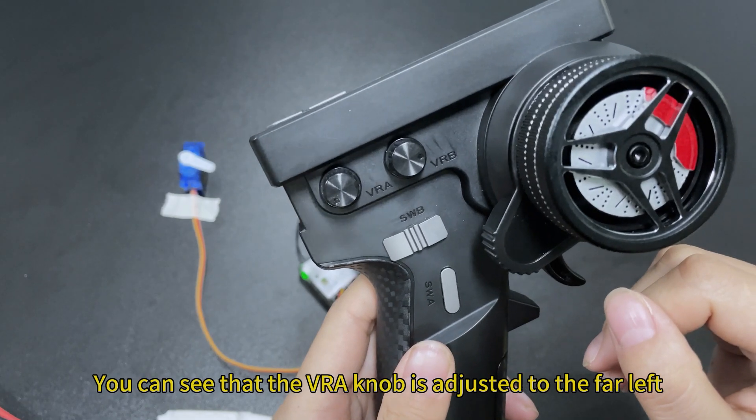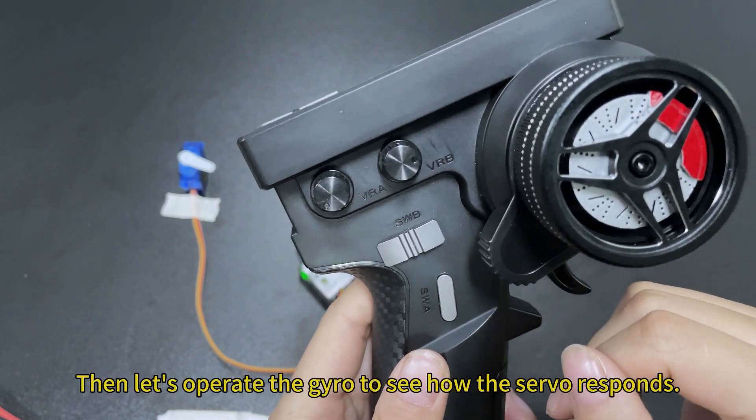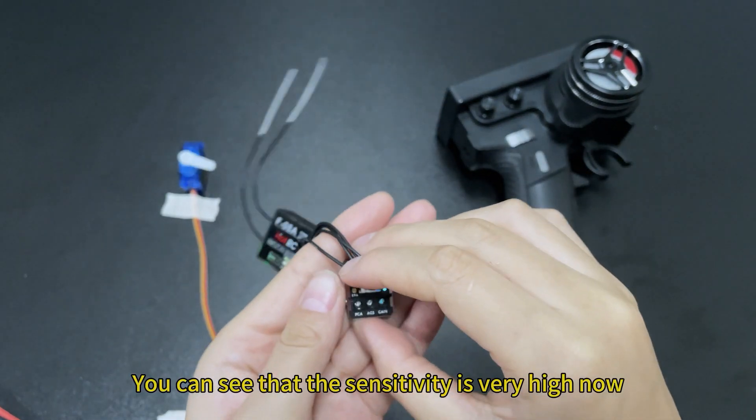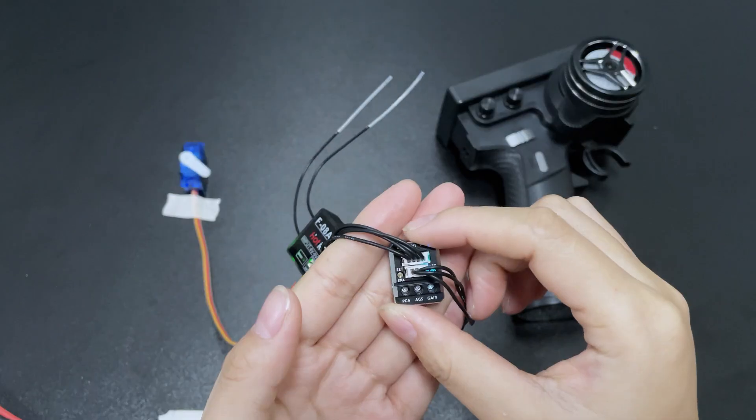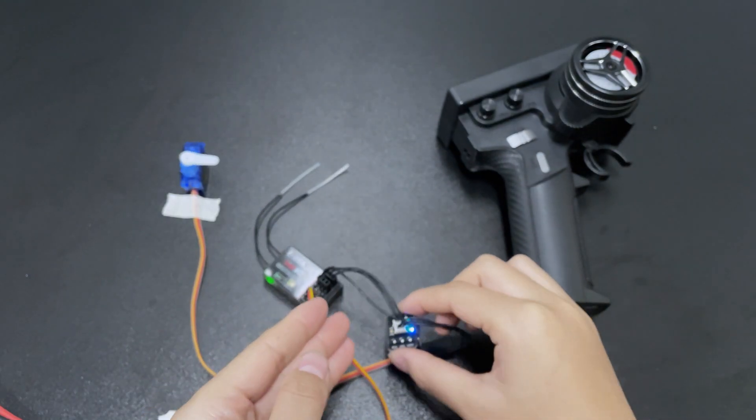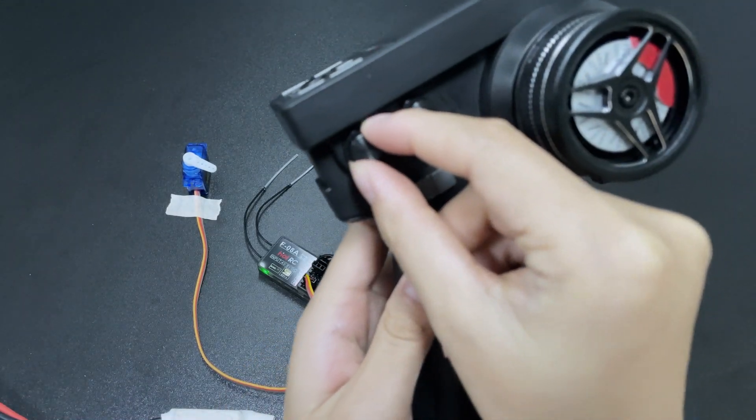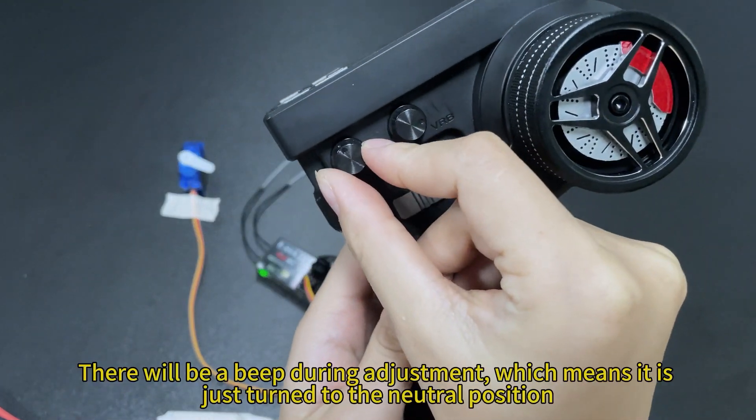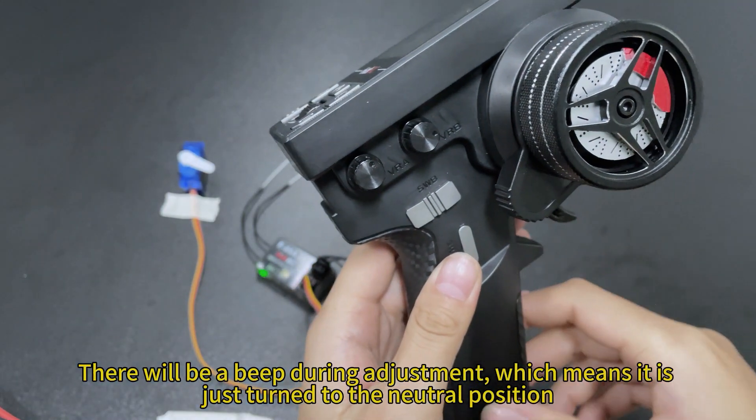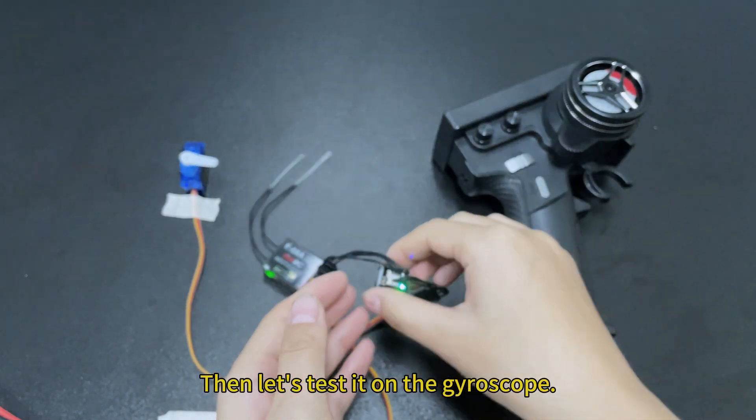You can see that the VRB knob is adjusted to the far left. Then let's operate the gyro to see how the servo responds. You can see that the sensitivity is very high now. There will be a beep during adjustment, which means it is just turned to the neutral position. Then let's test it on the gyroscope.